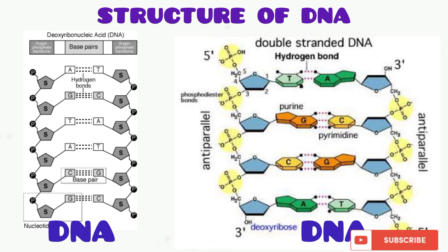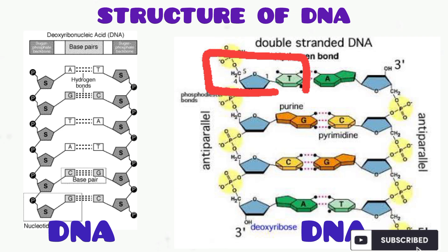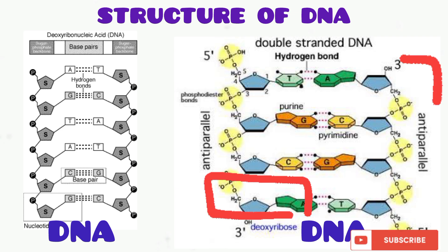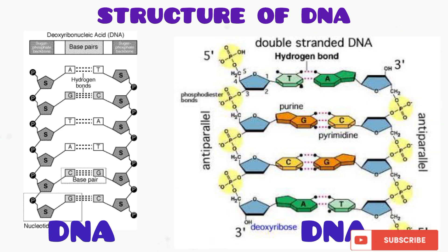In other words, the nucleotide is the monomer — that is, the building block or the unit that makes up DNA. Now take a look at this DNA structure. You can see the first nucleotide, the second, the third, the fourth, the fifth, and the sixth. There are many nucleotides in the DNA structure.